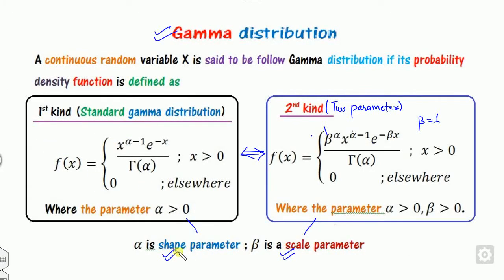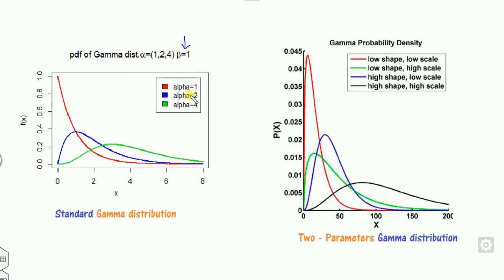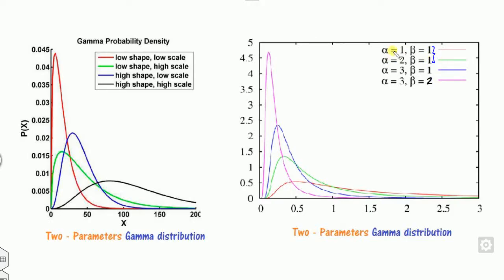Why do we call them shape and scale? If we vary the value of alpha while fixing beta as 1, the shape of the distribution changes. The red line is nothing but the exponential distribution, blue color and so on. On the other hand, if we fix the shape and vary the scale beta, the graph is almost similar but the only difference is about the peak. So that is why beta is called the scale parameter.